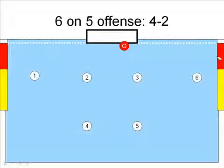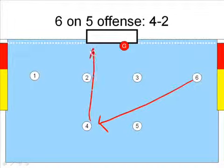The best option on the 6 on 5 is to catch the goalie moving across the cage. For example, if a pass comes from the 6 to the 4 and the 4 can shoot it quickly, the goalie doesn't have a chance to get over.